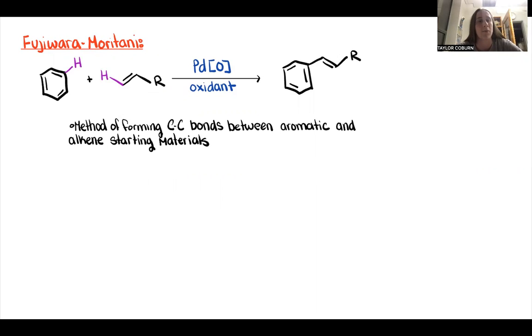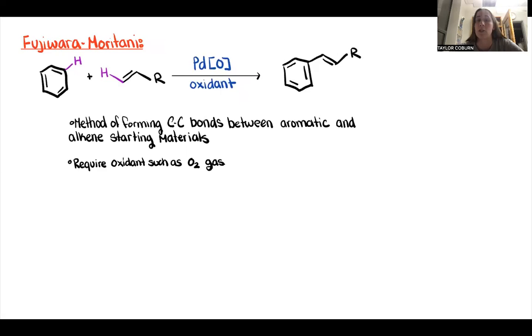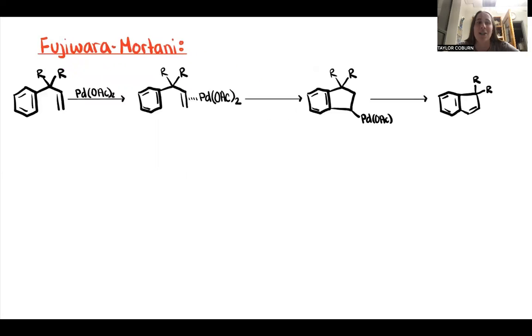But one thing that is super specific is the use of an oxidant, such as O2 gas. One other fun little tidbit about this reaction is that it can occur intramolecularly. In the mechanism, though widely disputed in the literature, it can occur starting off with an association between the alkene and the palladium, followed by a nucleophilic substitution similar to an EAS, and then it ends with a beta-hydride elimination to make our desired product.